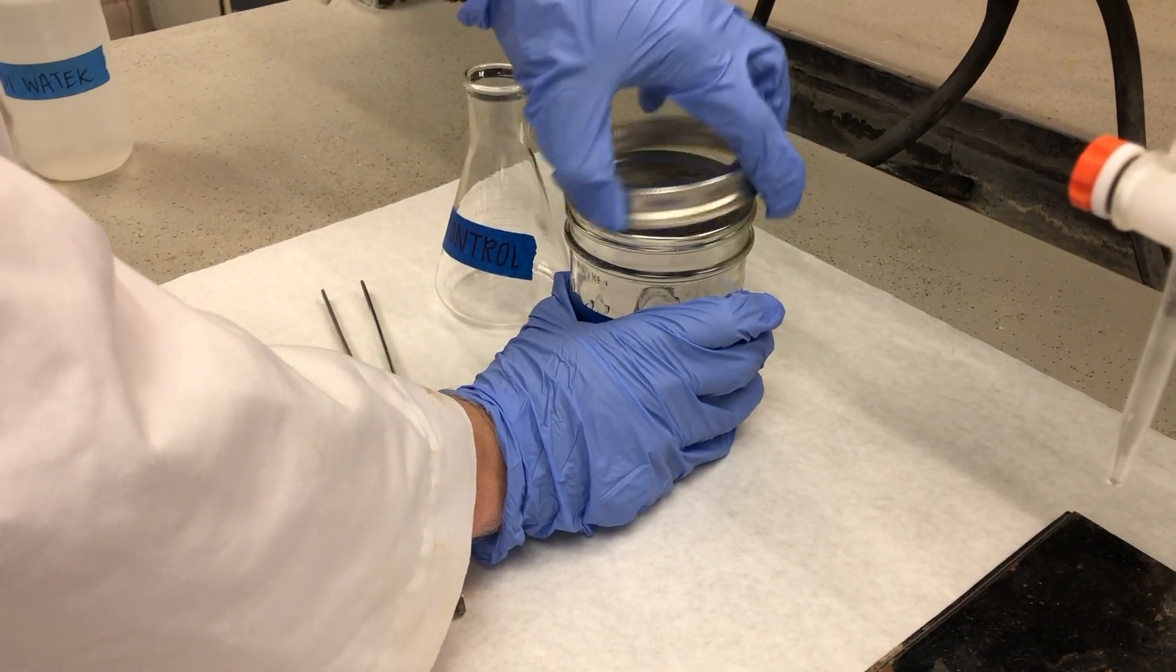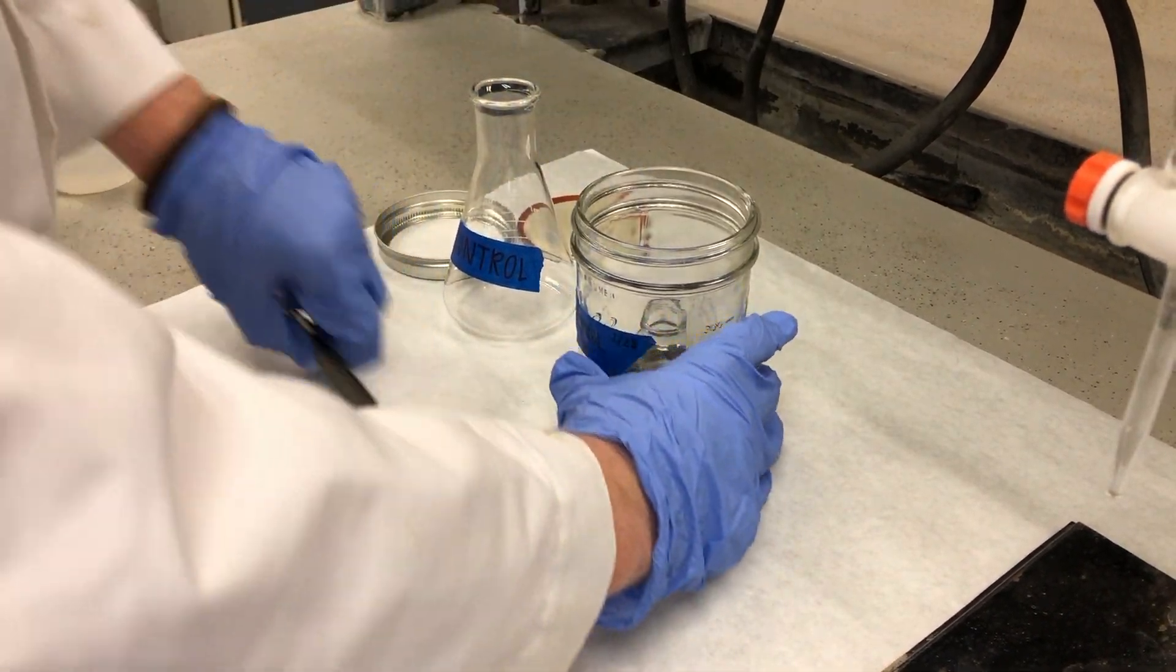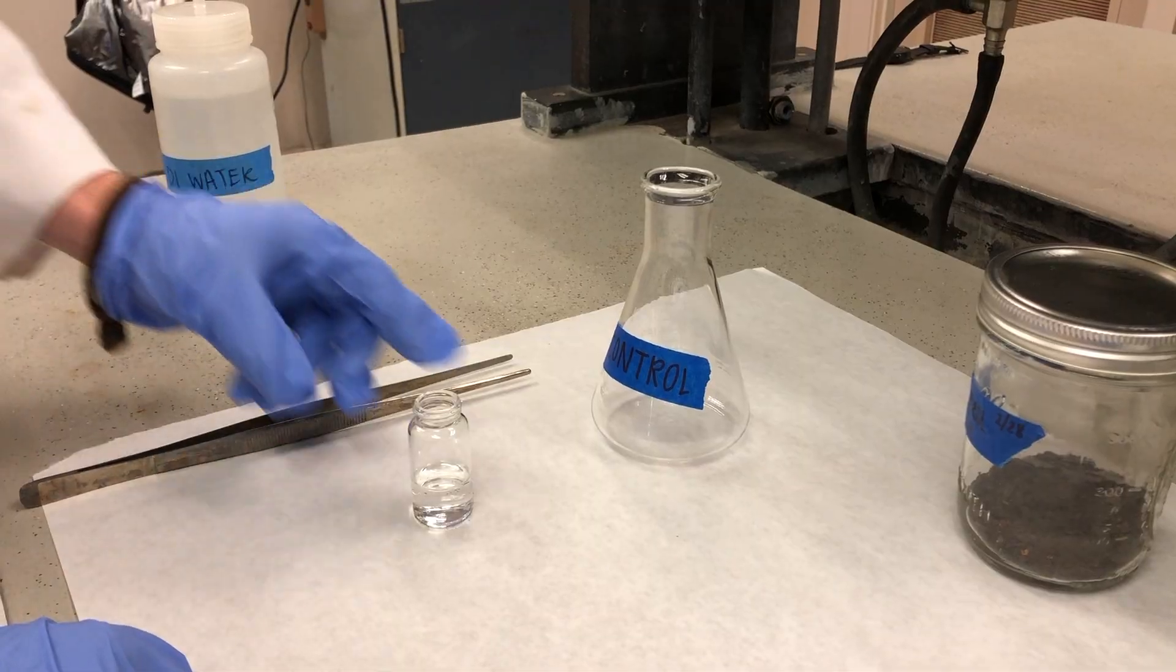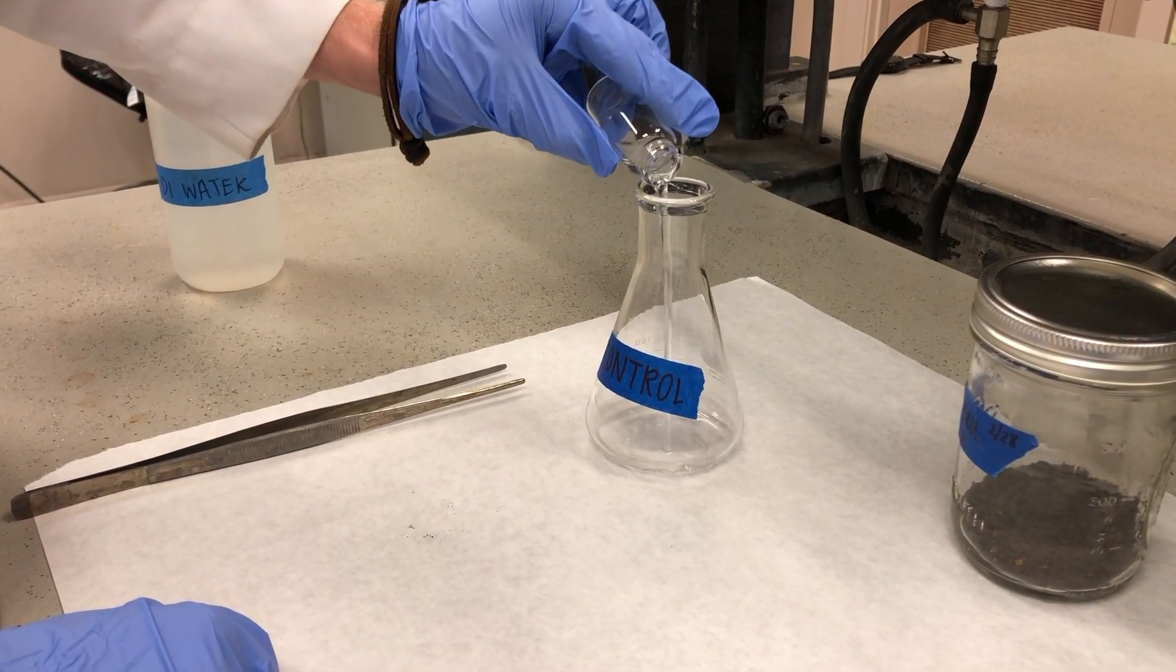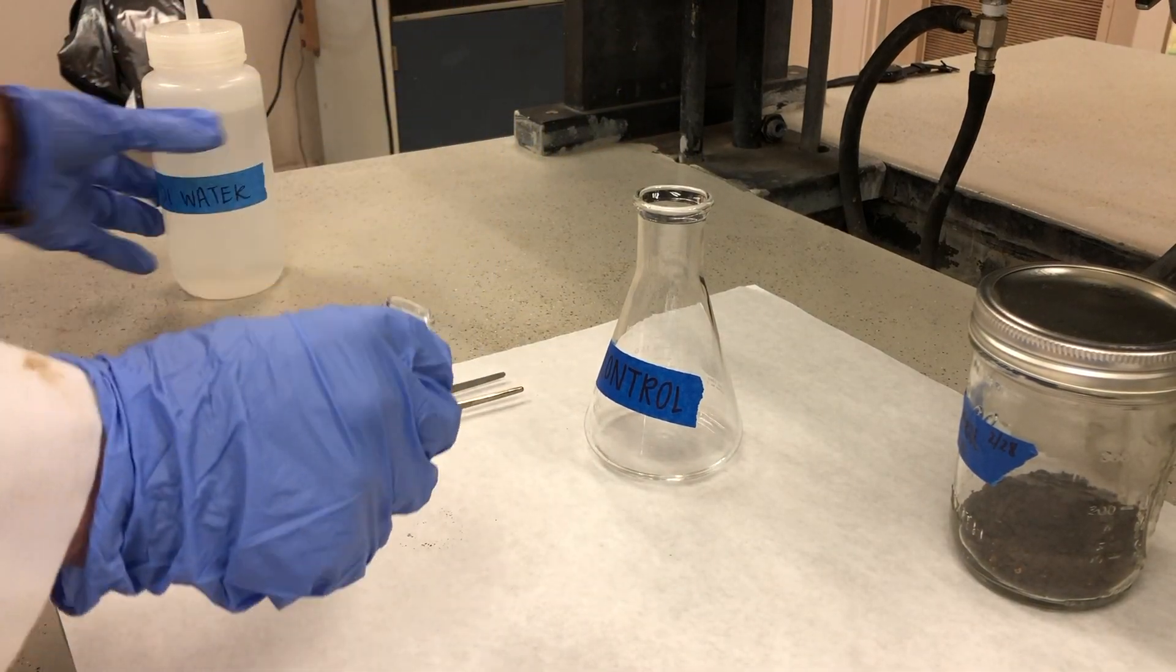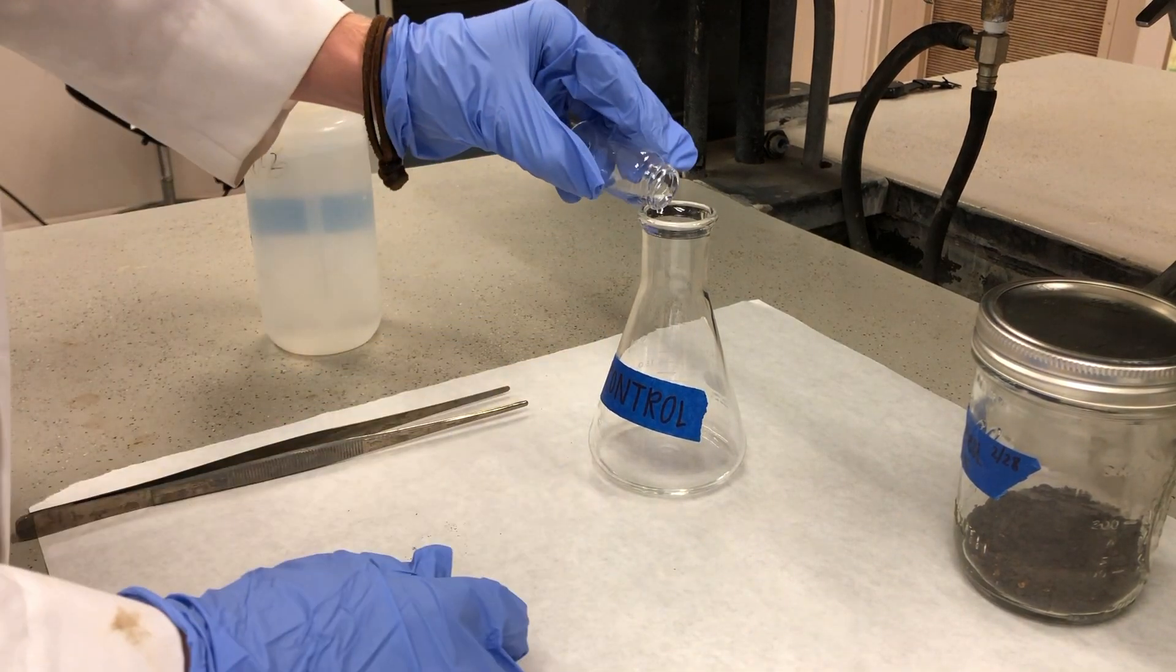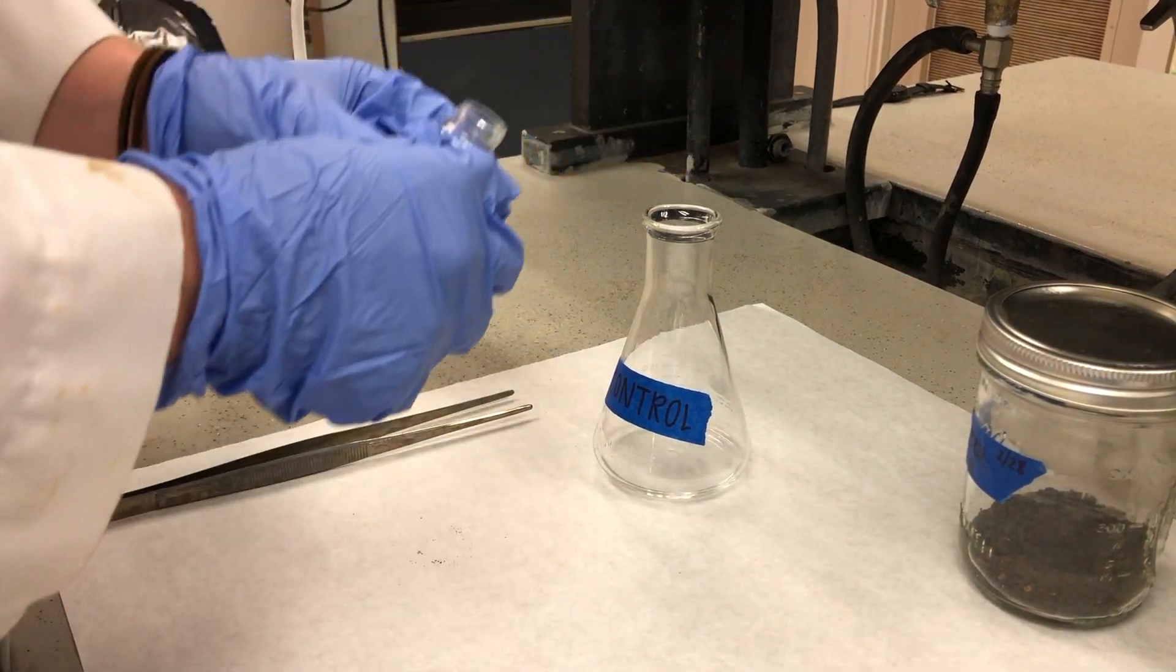Carefully remove the alkaline traps from the incubation jars using tweezers and pour the contents into the corresponding flask. Next, rinse the vial with deionized water into the flask to flush out all remaining NaOH. The amount of water used in this step is negligible. Repeat the process for each jar.